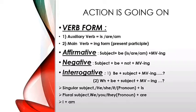Verb forms iski dekhiye. Auxiliary verb, helping verb — is, am, are ka use hota hai. Main verb ki first form mein -ing, present participle lagti hai. Affirmative sentences mein: subject + be (is/am/are) + main verb + ing. Negative mein: subject + be (is/am/are) + not + main verb + ing. Interrogative sentences are of two types. Be + subject + main verb + ing, question mark. WH words mein bhi: WH + is/am/are + subject + main verb + ing, question mark.